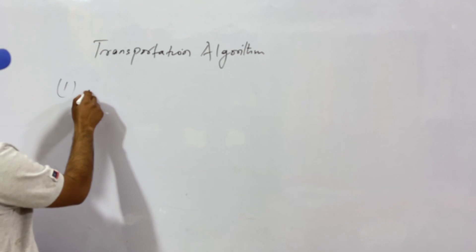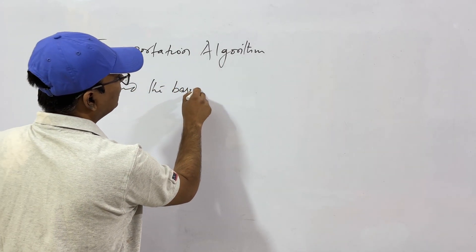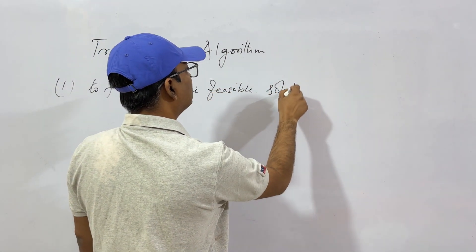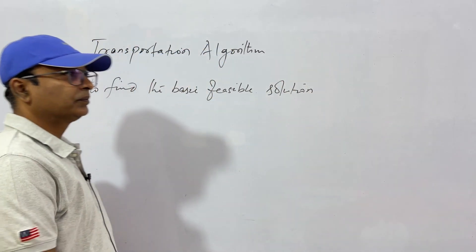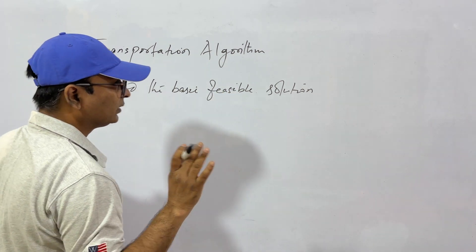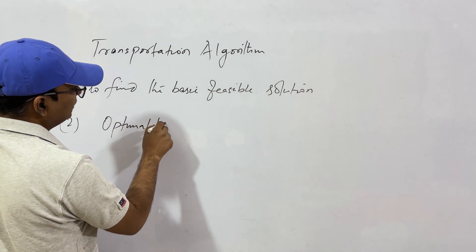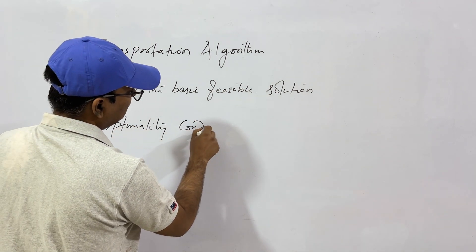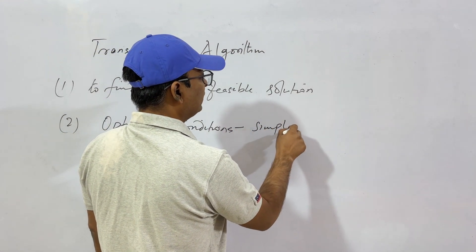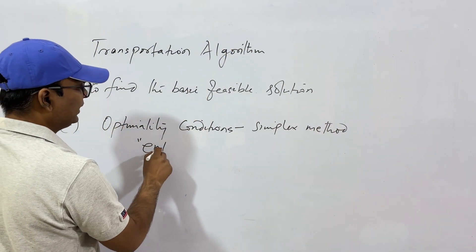The first step is to find the basic feasible solution. You will have to compare what I am saying with what I said when giving a lecture on the Simplex method. The second step is, using the optimality conditions of the Simplex method, you have to find the entering variable.